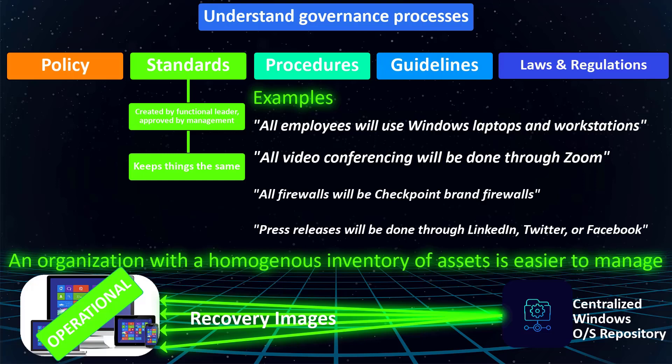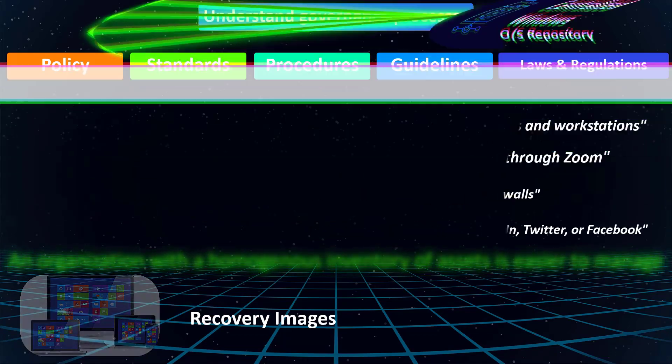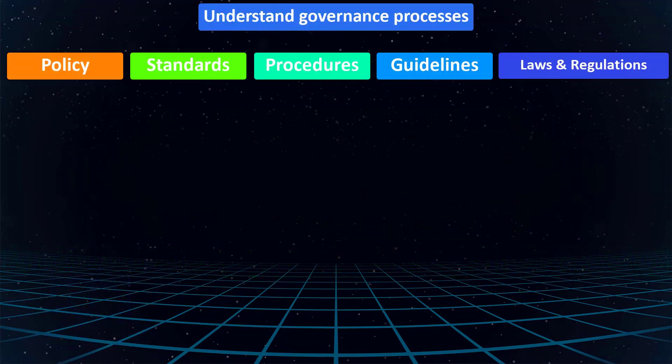Everything we've learned about standards — and everything we're going to learn about next — all exists to uphold and adhere to the initial policy set forth by senior management. Let's look at the next thing in the governance process: procedures.